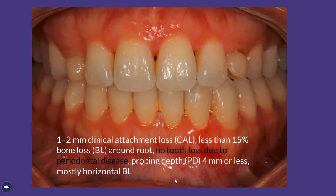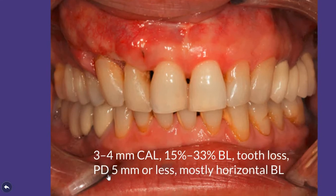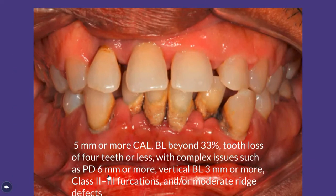For example, a Stage 1 case would show 1–2 mm clinical attachment loss, less than 15% radiographic bone loss, no tooth loss due to periodontal disease, and probing depth not exceeding 4 mm. A Stage 2 case would show 3–4 mm attachment loss, nearly 30% bone loss, no tooth loss, and pocket depth not exceeding 5 mm.